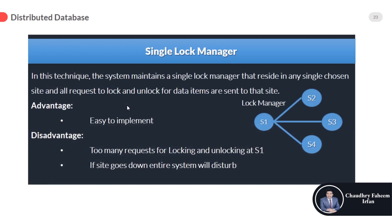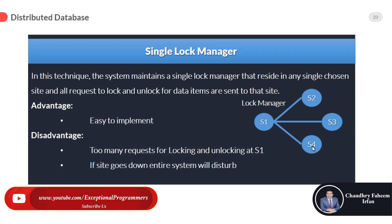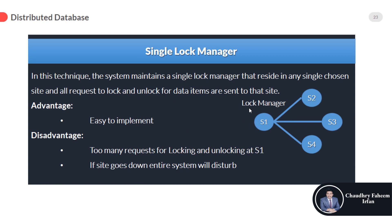The first technique is the single lock manager. In this technique, the system maintains a single lock manager that resides at one chosen site — it could be S1, S2, S3, or S4. All requests to lock and unlock data atoms are sent to that site. For example, if the lock manager is at S1, then S2 sends its locking requests to S1. This technique is easy to implement.